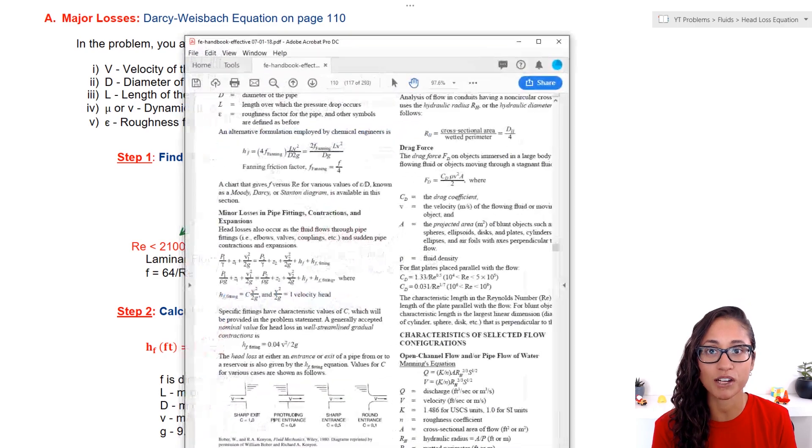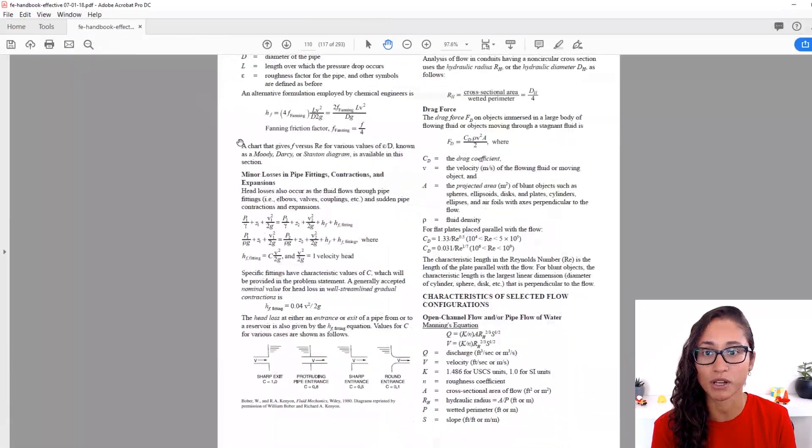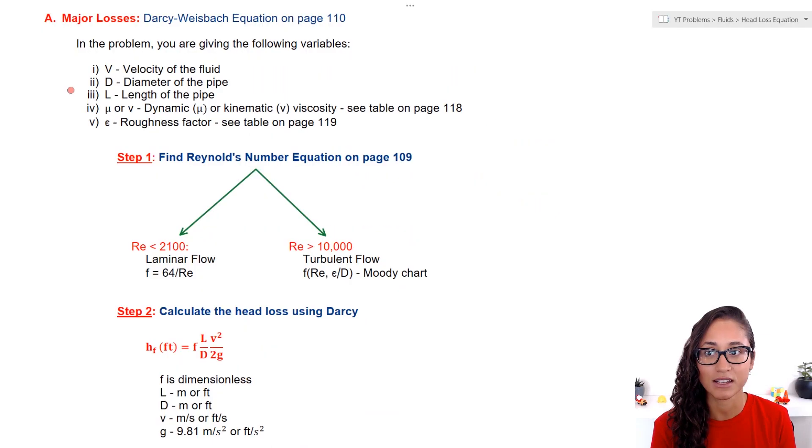The Darcy equation is provided to you on the reference manual on page 110. This is the equation right here. For the velocity, the diameter, and length of the pipe, we use those for Hazen-Williams as well.